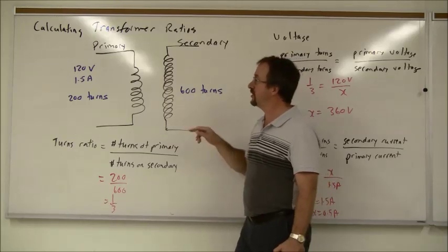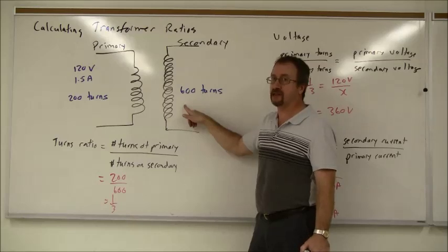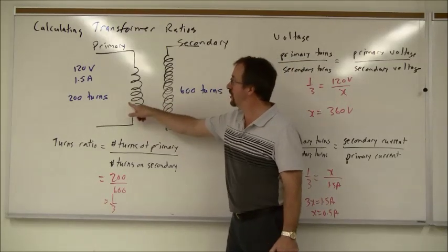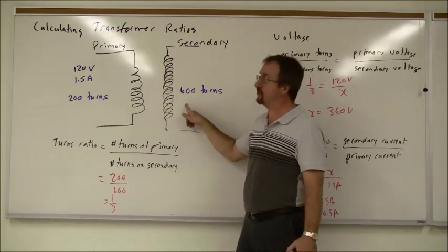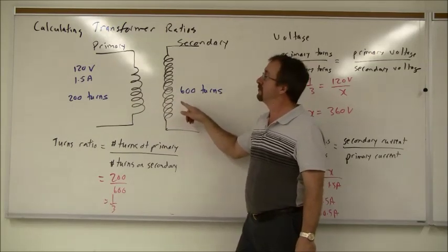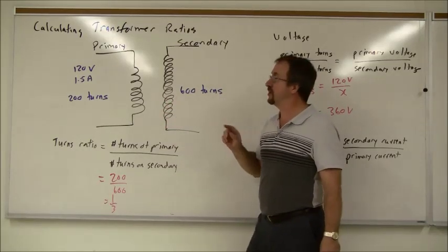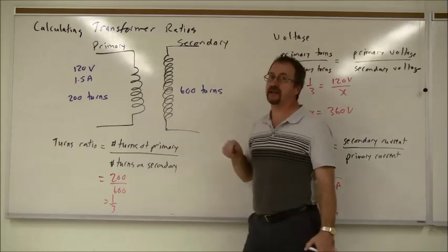The reason for that is the ratio between primary and secondary turns is the same ratio as the voltage. So if this increases ten times in terms of the number of turns, the voltage also increases by ten times. However, the current is inversely proportional, so it would decrease by ten times.